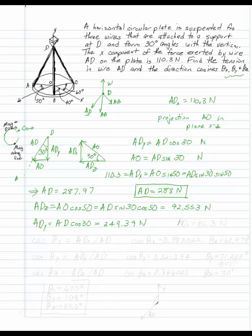Once you have these three components, ADX, ADY, and ADZ, remember ADX is 110.3 given in the problem, you can say that the cosine of each of the direction cosines is the component divided by the magnitude of the total vector. Generally we write it with AD on the other side, but in this case we have AD, so what we're looking for are these angles.